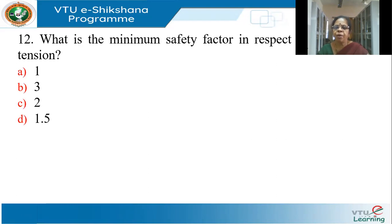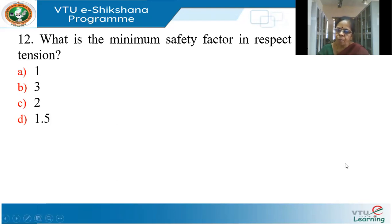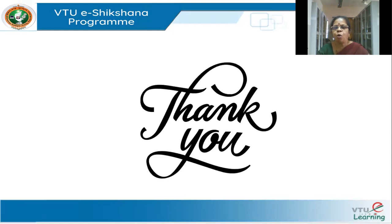What is the minimum safety factor to be used with respect to tension? The minimum safety factor is two. You can use more, but if you use more, your cost will go up. This quiz was just a recap on some of the concepts we studied. Thank you, and let us meet again for the next module.